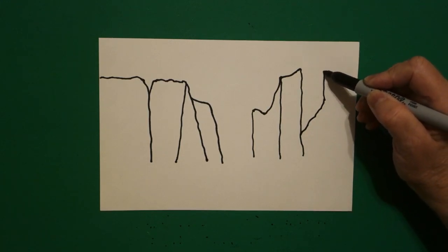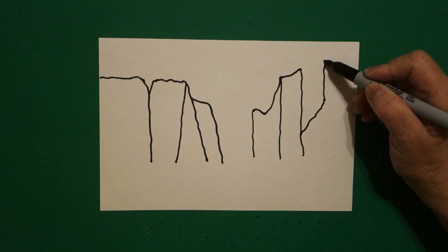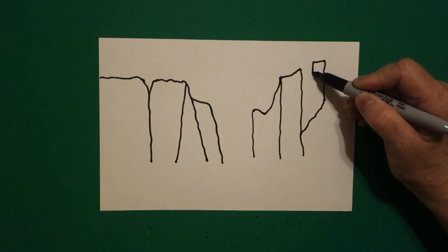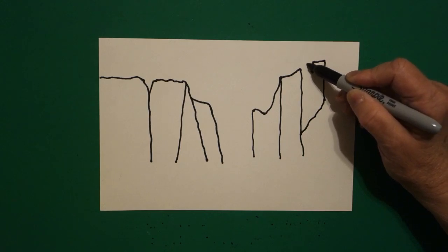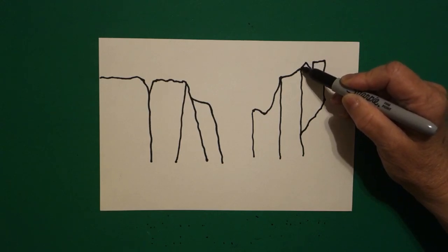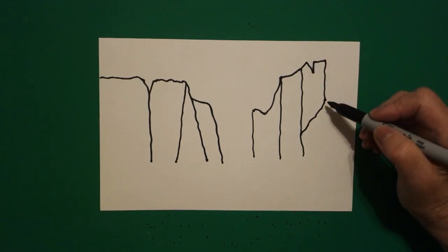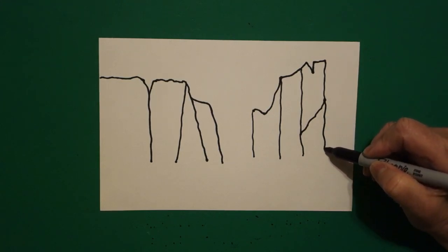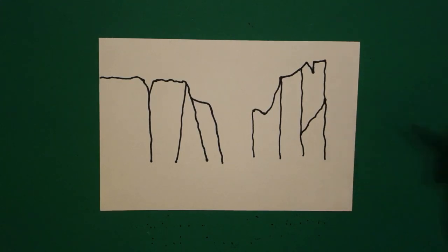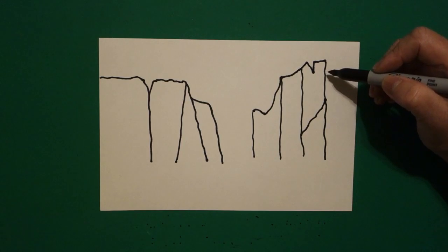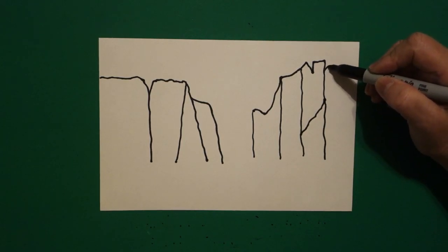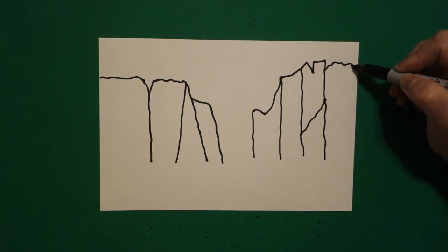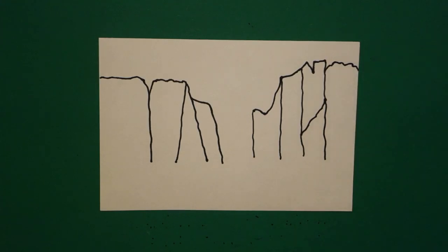Right about here we're going to come back up with a wavy line up, wavy line up, straight line over, straight line down, up and connect. Come back down here, draw another wavy line, leave it floating. Come back to the top, right about here we're just going to draw another slightly wavy line off the page.